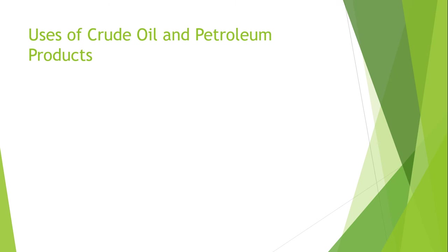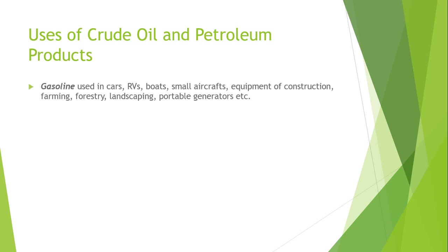Let us discuss the uses of crude oil and petroleum products. The first one is gasoline, most commonly known in Pakistan as petrol. It is used in cars, recreational vehicles, boats, small aircraft, and in equipment for construction, farming, forestry, landscaping, and portable generators.